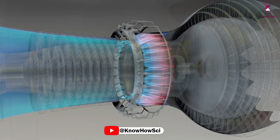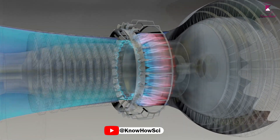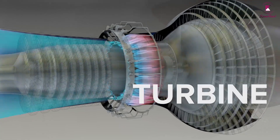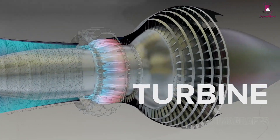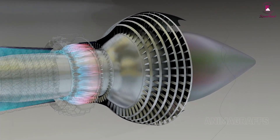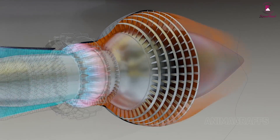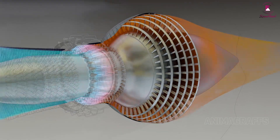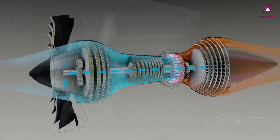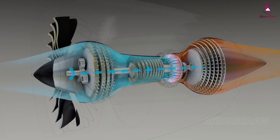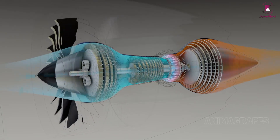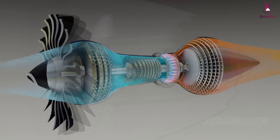After combustion of the air-fuel mixture, the combusted gas enters into the low-pressure and high-pressure turbine. After entering the turbine, the hot gases expand and strike the turbine blades. The turbine blades extract enough power from the combusted mixture to drive the low-pressure compressor and fan.